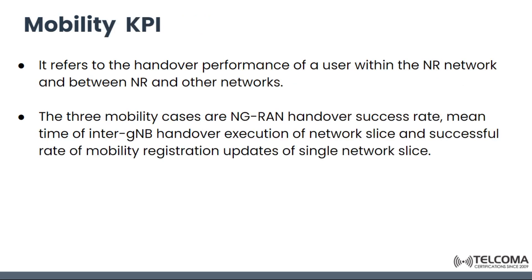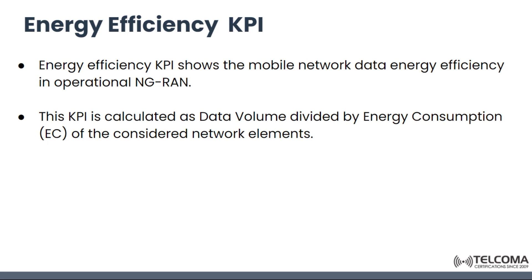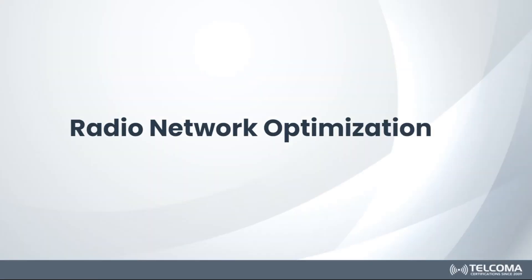Mobility KPI covers three mobility cases: handover success rate, mean time of handover execution, and registration updates. Energy Efficiency KPI shows the data energy efficiency in NG RAN. It is calculated as data volume divided by energy consumption of the network elements.